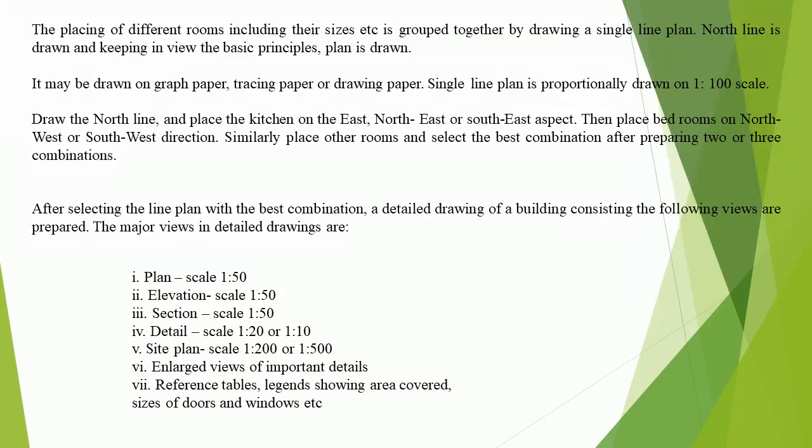Draw the north line and place the kitchen on the east, northeast, or southeast aspect. Then place bedrooms on northwest or southwest direction. Similarly, place other rooms and select the best combination after preparing two or three combinations. After selecting the line plan with the best combination, a detailed drawing of the building consisting of the following views is prepared.